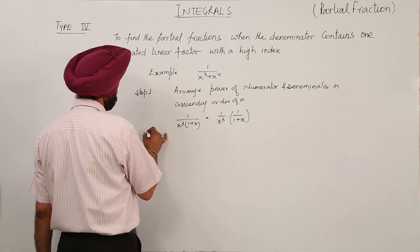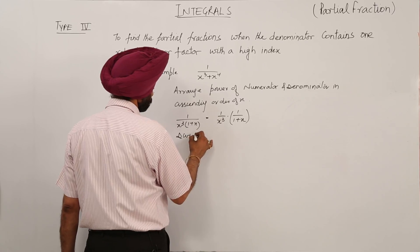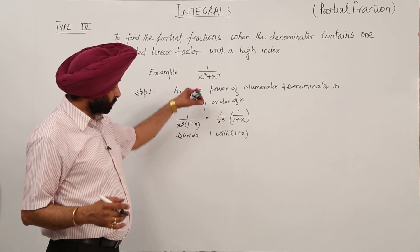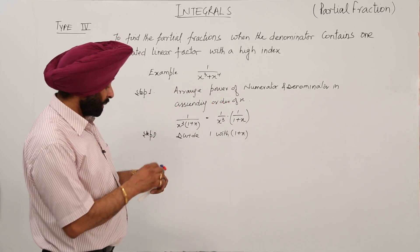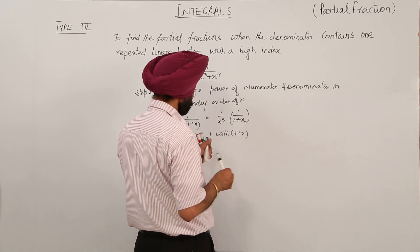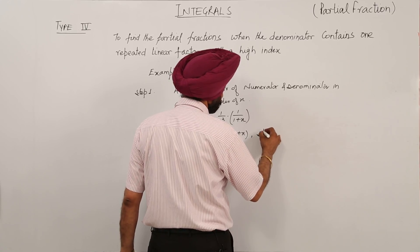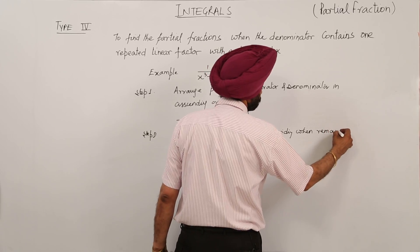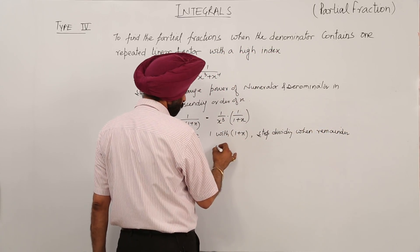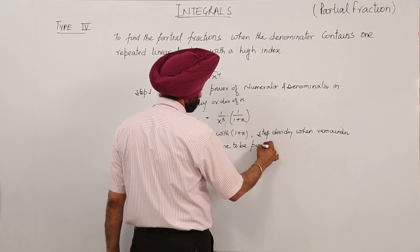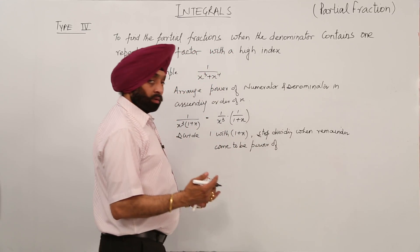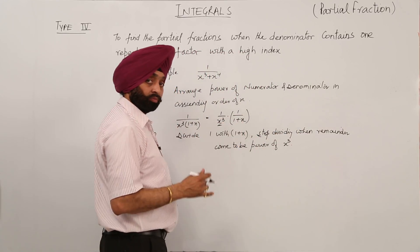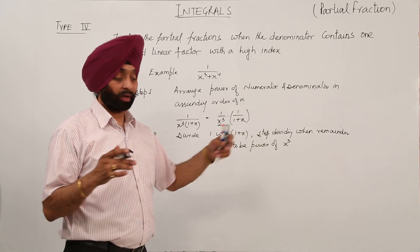Step 2. Now divide 1 with 1 plus x for the second part. We are not dealing with the first one, we are going for this part. When you are dividing 1 with 1 plus x, stop dividing when the remainder comes to be the power of the first function, power of x cube. Suppose here it is 5, then we have to leave up to 5 also, ok?